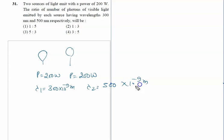We have to calculate the ratio n1/n2. Let n1 be the number of photons per unit time emitted by bulb 1.